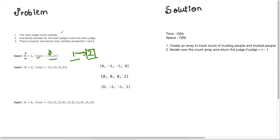We are given 3 conditions to find out who our judge is. The first condition is the town judge trusts nobody — there are no outgoing dependencies for person 2, only person 1 trusts person 2. The second condition is everyone except the town judge trusts the town judge. So with 2 people, person 1 trusts person 2, making person 2 the judge. The third condition is there is exactly 1 judge in this town.